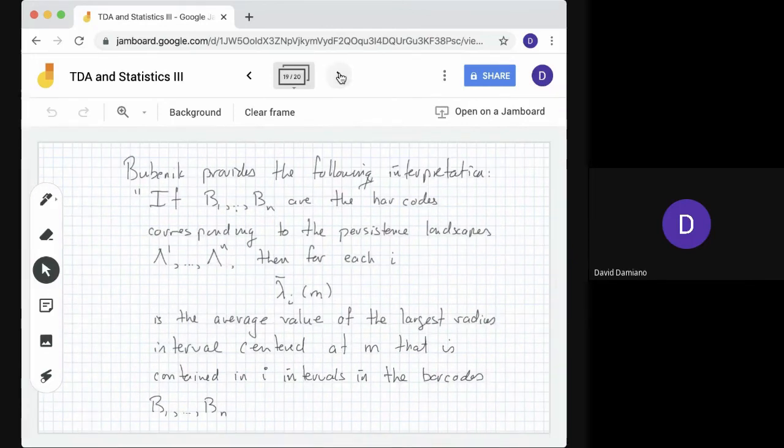Here's a statement from Bubenik, which we won't prove here, but we'll have some examples of it in the homework. If b1 to bn are barcodes with corresponding persistence landscapes λ1 to λn, then for each line, the mean function of these landscapes is the average value of the largest radius interval centered at m that is contained in i intervals in the barcode. The intuitive idea is: if we see a barcode and take any value between b and d, and look at all the barcode intervals that contain that point, there will be a largest symmetric interval about the point which fits in all of those barcodes.